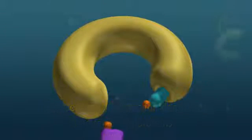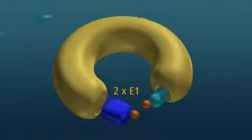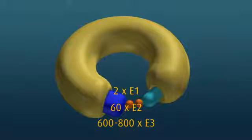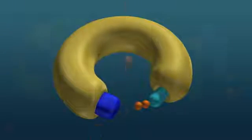We know that in humans there are two types of E1 enzyme, approximately 60 types of E2, and between 600 and 800 types of E3. In other words, potentially nearly 90,000 different combinations.